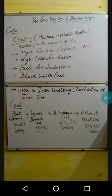Another very important use of coke is in iron smelting. We get iron ores from the mines, and when we have to extract iron from the iron ore, we heat the iron ore with coke. What happens is all of the impurities get vaporized and finally the iron ore is converted into the pure form of iron metal. So coke is also used in the iron smelting process.